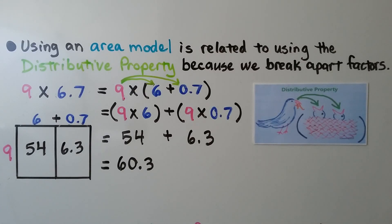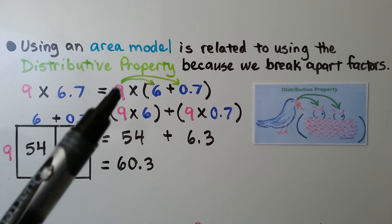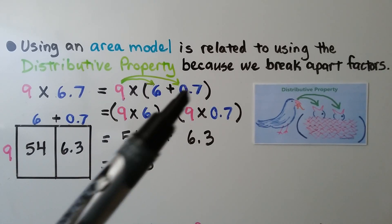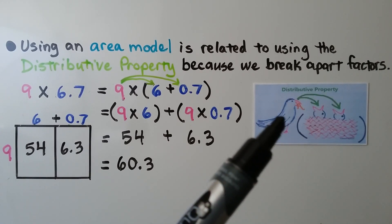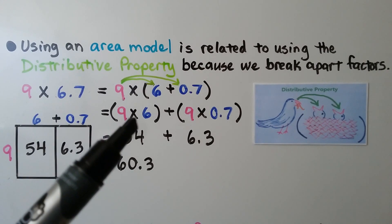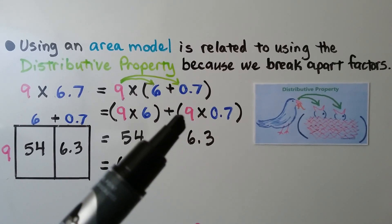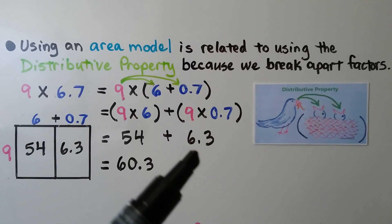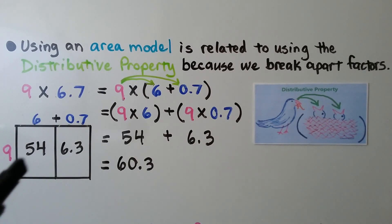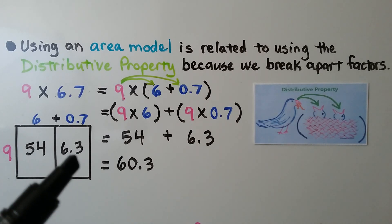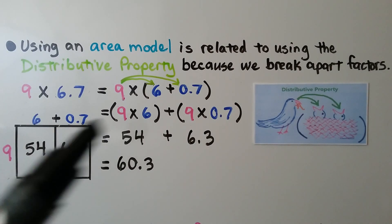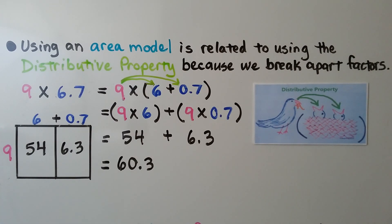Using an area model is related to using the distributive property because we break apart factors. We have 9 times 6 and 7 tenths. We multiply 9 times (6 plus 7 tenths). Just like a mother bird who distributes food to her babies in the nest, the 9 is distributed to the 6. So we have 9 times 6 and 9 times 7 tenths. 9 times 6 is 54; and 9 times 7 tenths is 63 tenths, regrouped as 6 and 3 tenths. They both use partial products, and the total is 60 and 3 tenths.